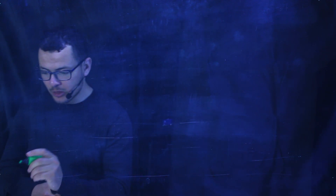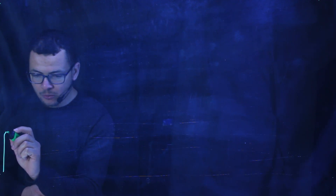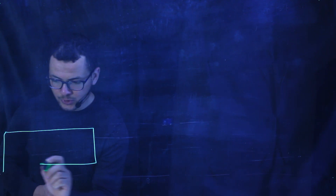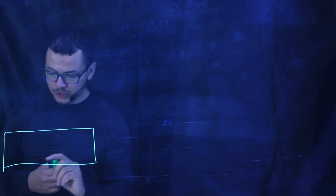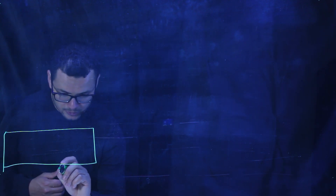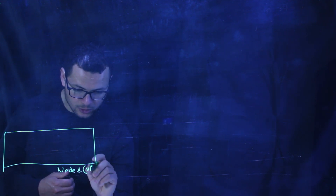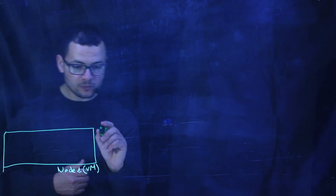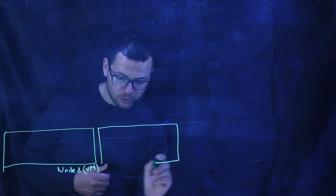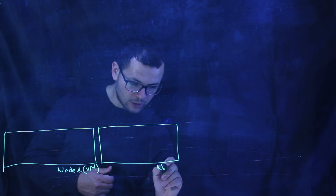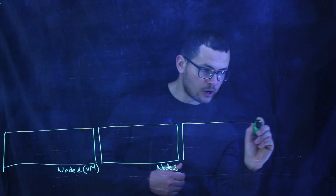So let's start drawing the architecture of Kubernetes right here. We have multiple virtual machines or physical servers. Those are called nodes in the Kubernetes jargon. So this one will be called node number one — this could be a VM or physical server. And since it is a cluster, we'll have multiple nodes running inside our cluster. Here we'll have node number two and node number three.